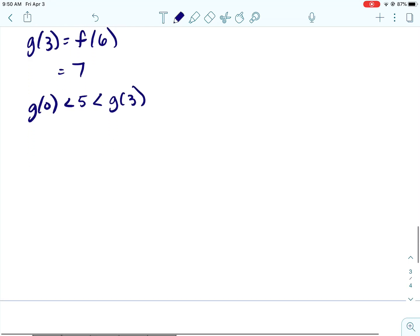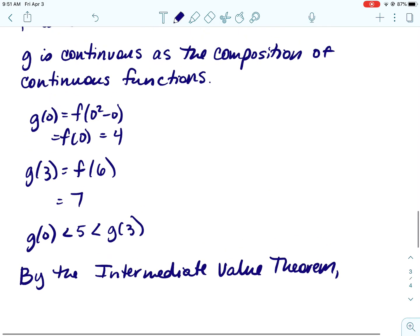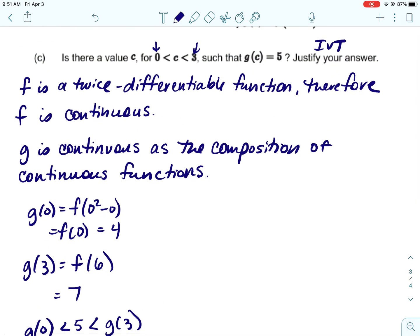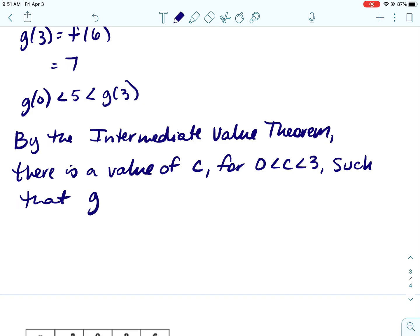Alright, and then g of 3 is f of 3 squared minus 3, or f of 6, and f of 6 is 7. Alright, and then we would need to make sure that we let our test reader know that 5 falls in between those two values. Alright, and then we need to make sure we mention the intermediate value theorem. And then we want to use their words. So is there a value of C? So we're just going to change that. There is a value of C.